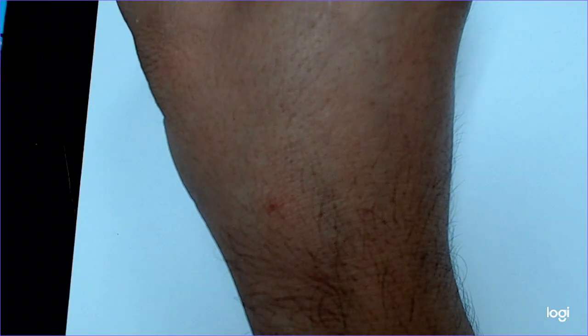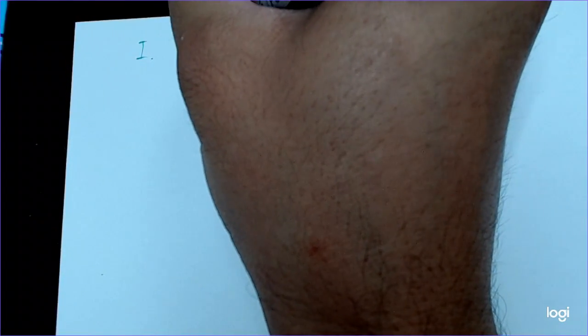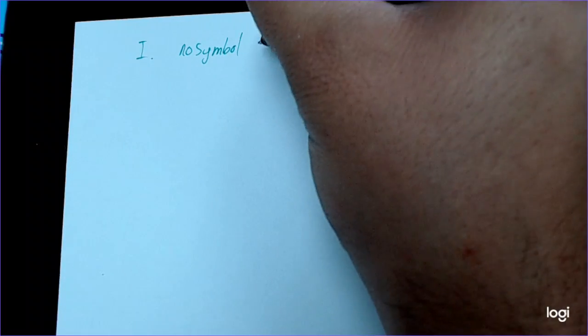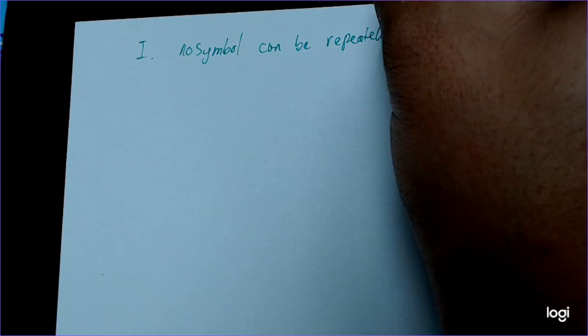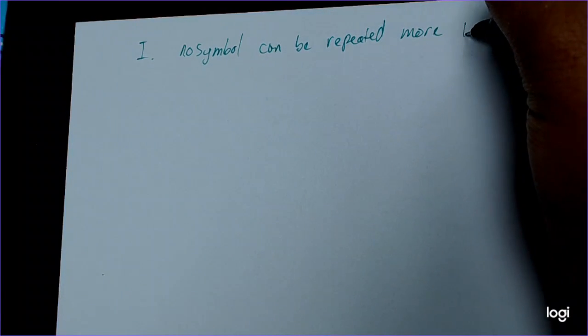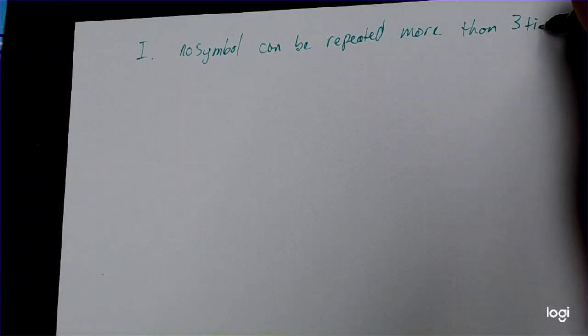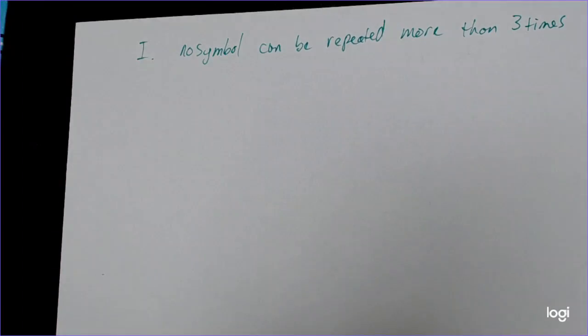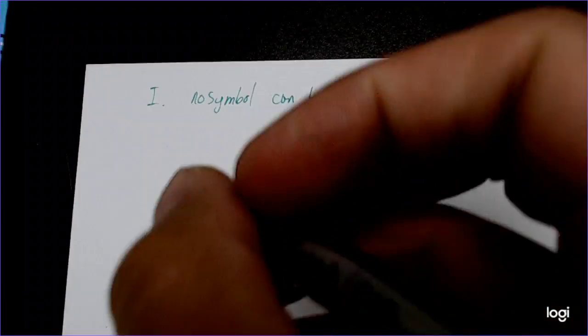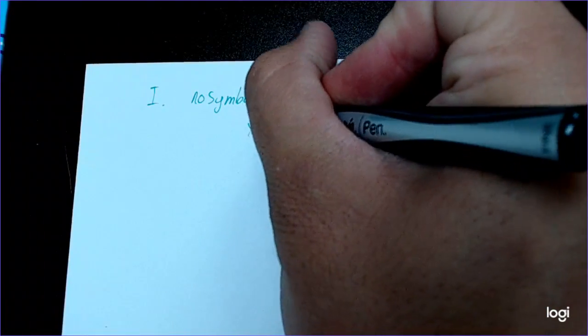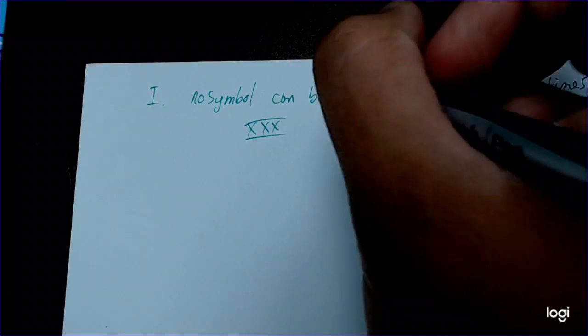Now there are some rules to Roman numerals. The first rule is no symbol can be repeated more than three times. So if I wanted to write the number 30, I could write XXX. If I wanted to write the number 3, I could write III.